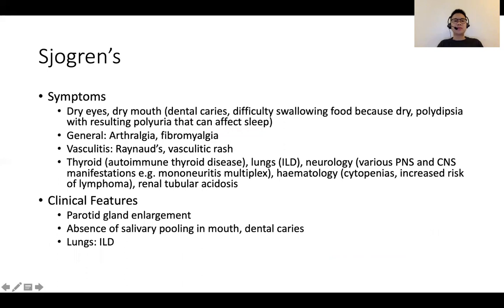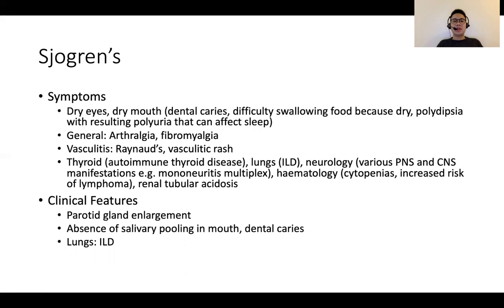Next, Sjogren's syndrome. Typically it presents with dry eyes and dry mouth, otherwise known as xerostomia. Patients may present with complications of dry mouth such as dental caries, or difficulty swallowing due to dryness rather than true dysphagia. They can also manifest with polydipsia and resulting polyuria. Other symptoms include arthralgia, fibromyalgia, vasculitic problems, ILD, mononeuritis multiplex, hematological problems such as cytopenias, and renal tubular acidosis, which is not an uncommon manifestation.